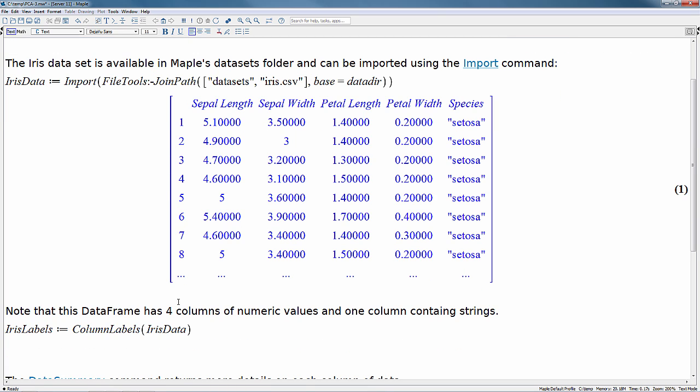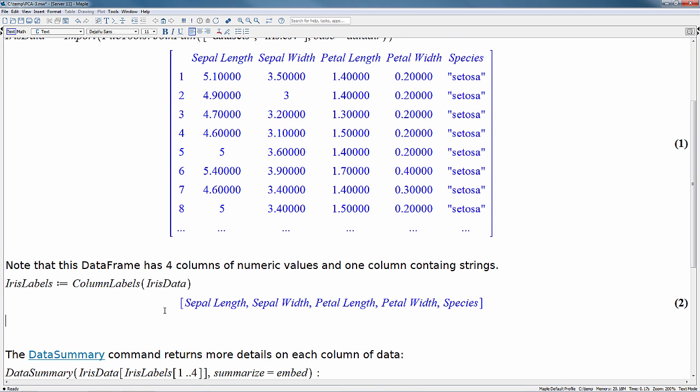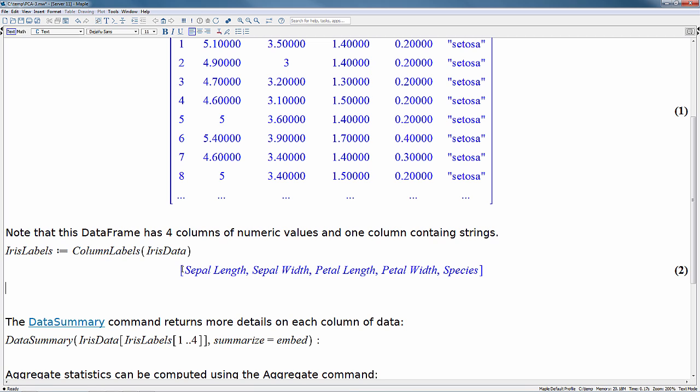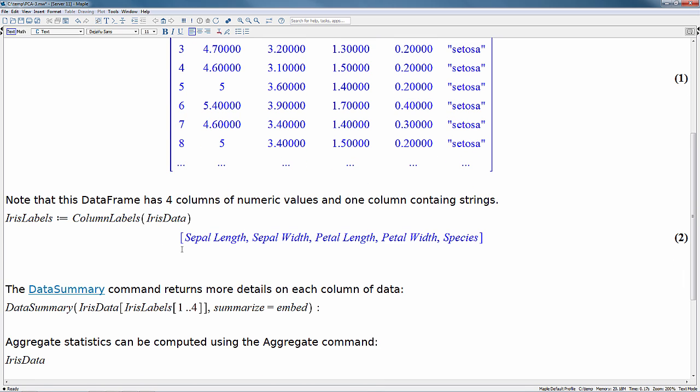Now for ease of use, I'm going to assign a new variable called iris labels, and I'm going to assign to it the column labels from the iris dataset. The reason I do this is a number of commands from statistics, such as plots and the data summary command, usually require the data to be of type numeric. If we give it a column of strings, it won't know how to handle that information. So let's begin and have a look at this dataset in a more meaningful way.